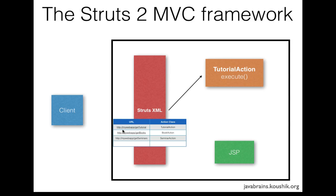Whenever a client makes a request — say for getTutorial — Struts will look up which action class to call, which is TutorialAction, and then execute the method called execute. This is the default method that the Struts framework calls whenever there is a request. With this configuration in the struts.xml and this action class, we have an initial flow established from the client request to a method execution. This is not sufficient for a complete request-response cycle, but it's something we can get started on. Let's open up Eclipse and at least code the first path that we understand so far.